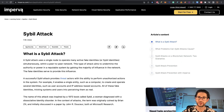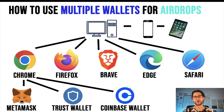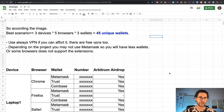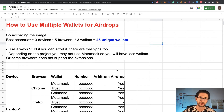So that is basically what I wanted to cover in this video. To summarize: use one device, different browsers, and in each browser one extension installed. Doing this, you could have 45 unique wallets if you require that. I hope you enjoyed this transparency — this is actually 100% true. If you find value in this video, please share it on any of your social media.